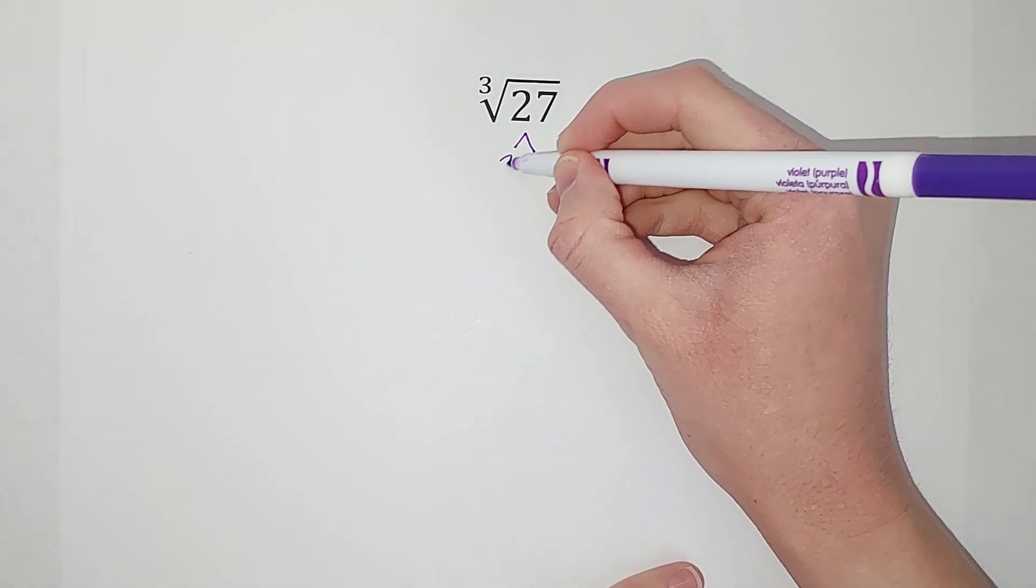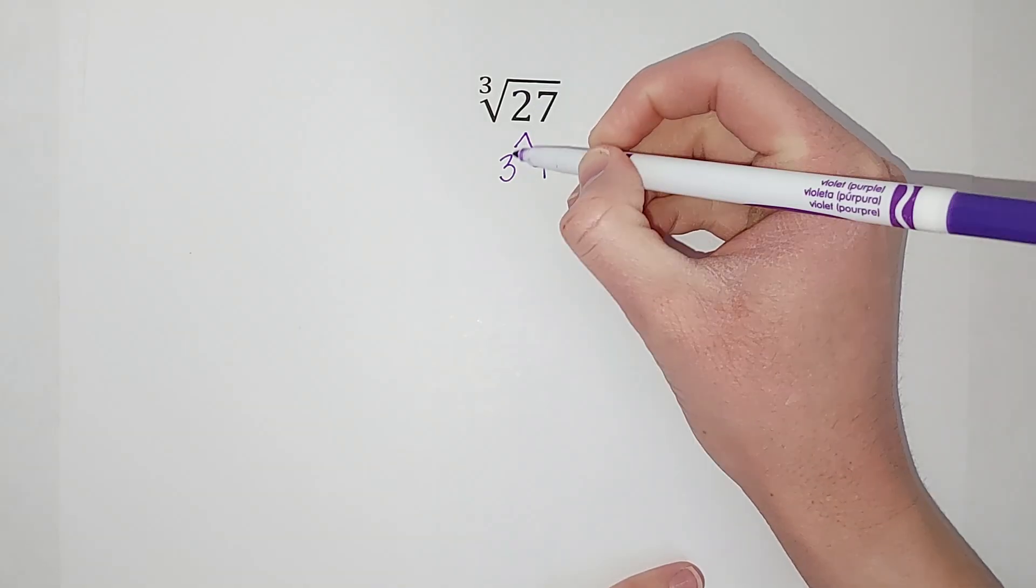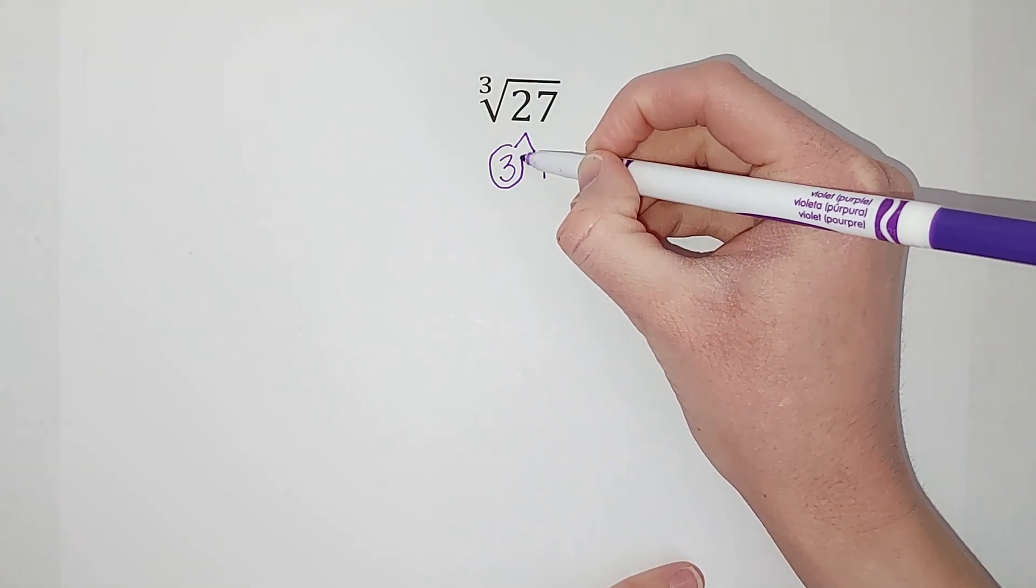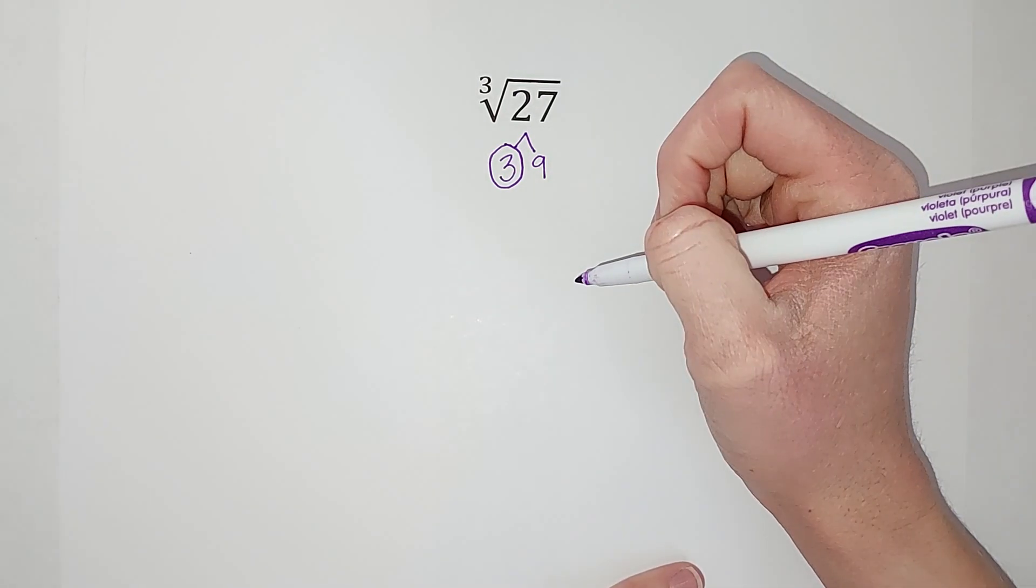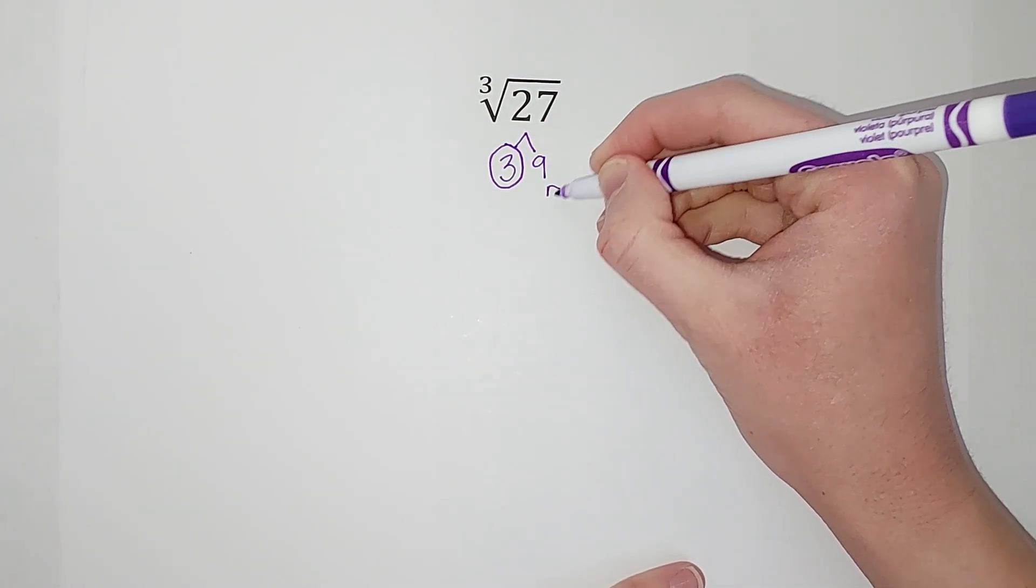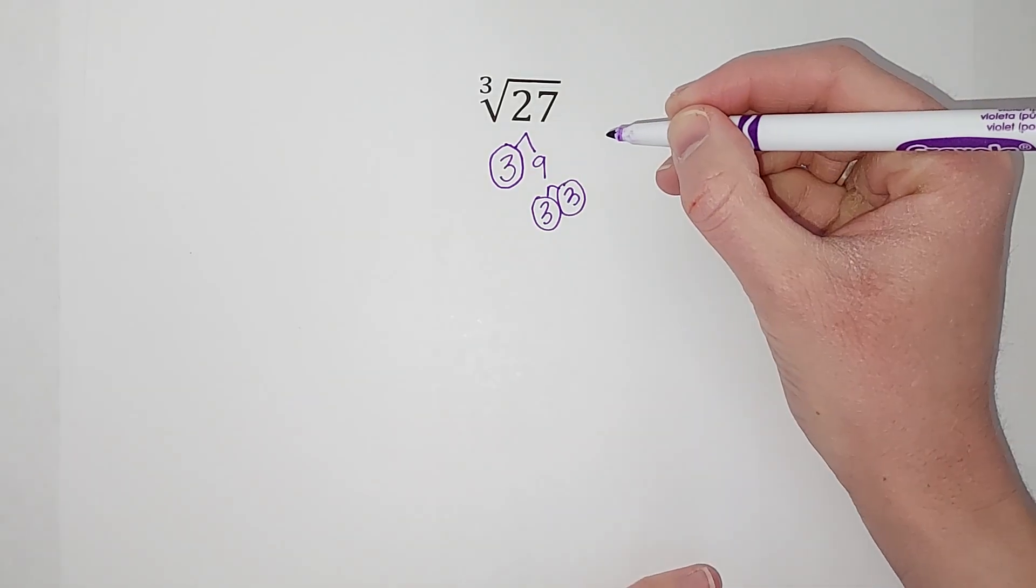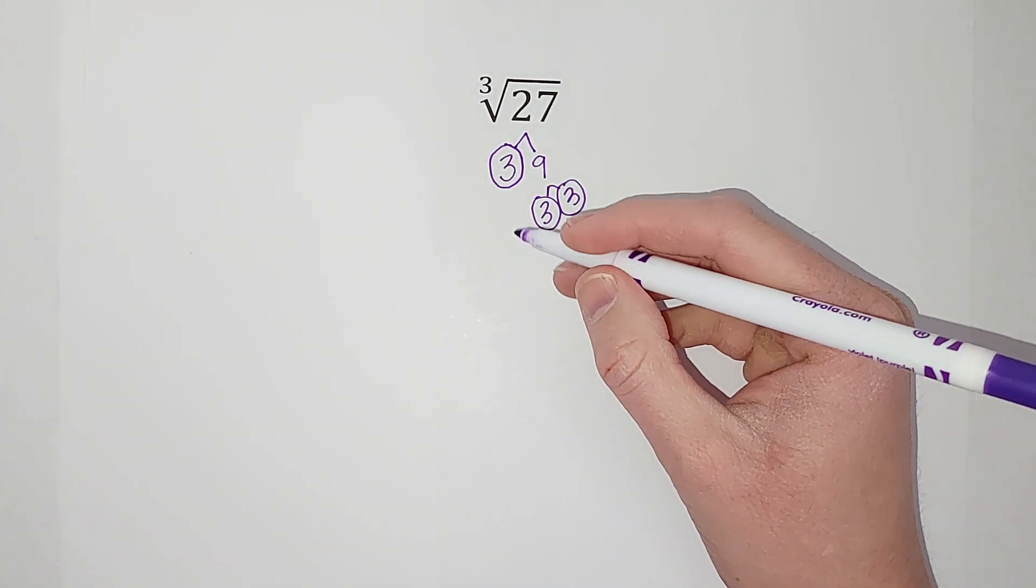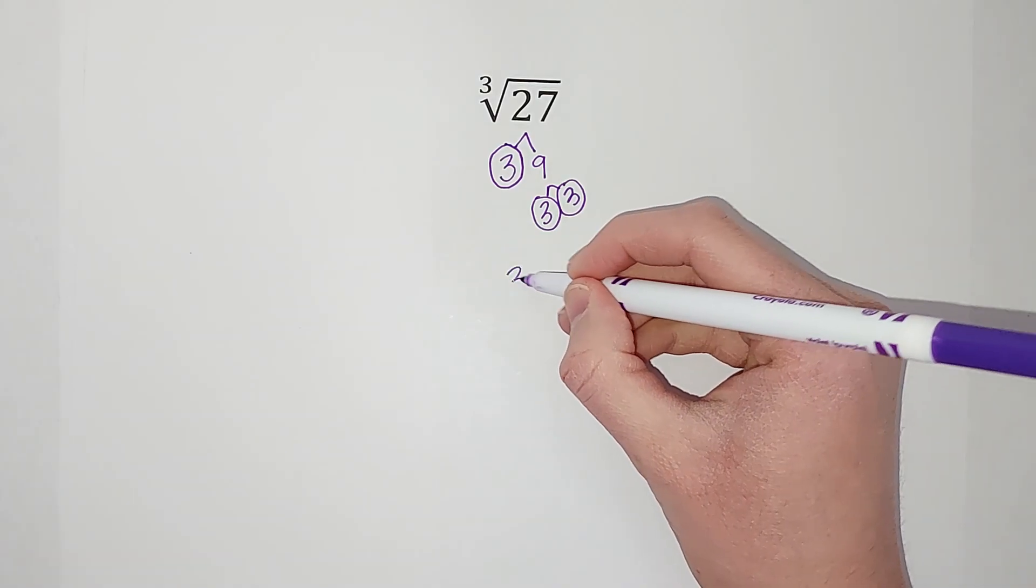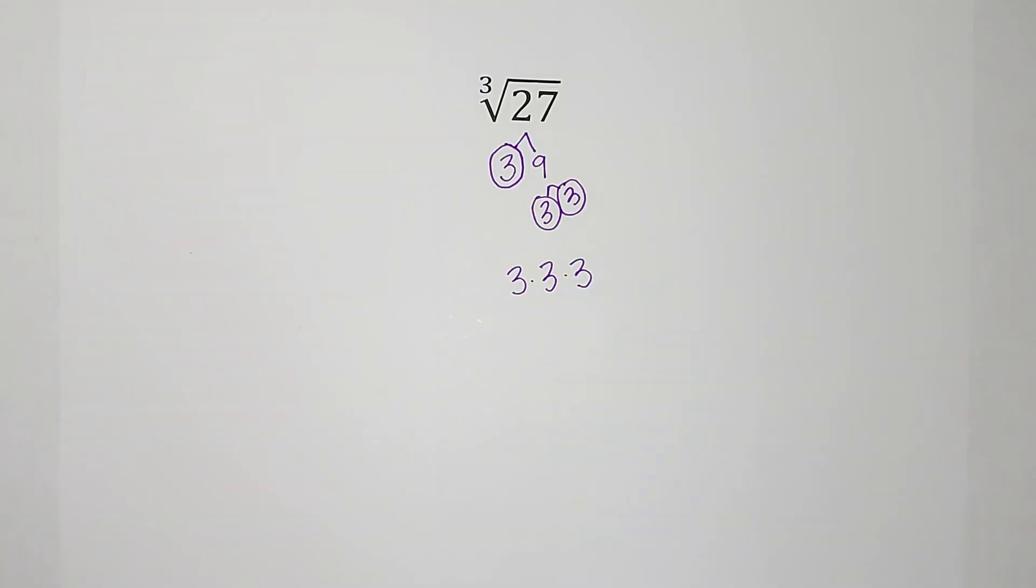Three times nine gives me 27, right? And I'm going to circle once I get to a prime number, which means it can't be broken down anymore. And then nine is three times three. Okay, so another way to write 27 is three times three times three.